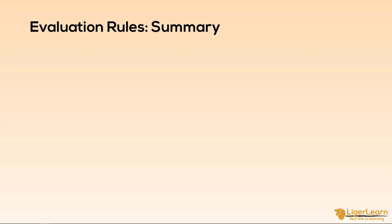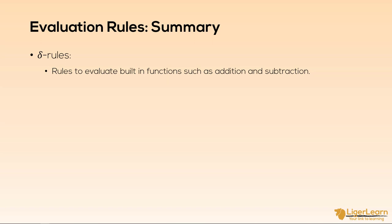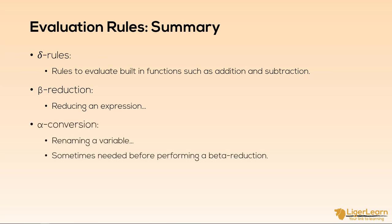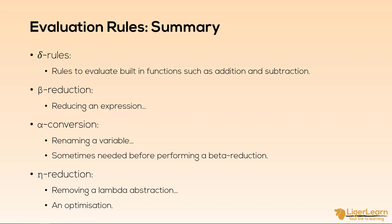Let's summarize each of the evaluation rules. Delta rules are used to evaluate built-in functions such as mathematical functions. Beta rules are used to reduce an expression: a beta reduction is the result of applying a lambda abstraction to its argument, copying the body and replacing all free occurrences of the formal parameter with the argument. An alpha conversion is used to rename variables within a lambda expression, sometimes needed before a beta reduction to prevent the name capture problem. An eta reduction is an optimization which can be used to replace one lambda expression with another simpler one.